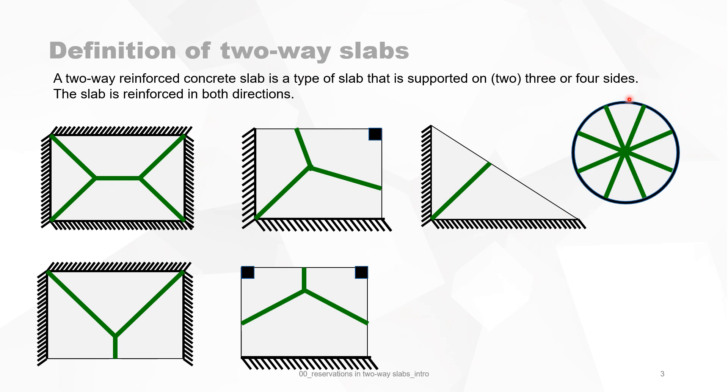You can also have a circular shape, which is always a two-way slab, or more generally a piece of slab supported by three columns.